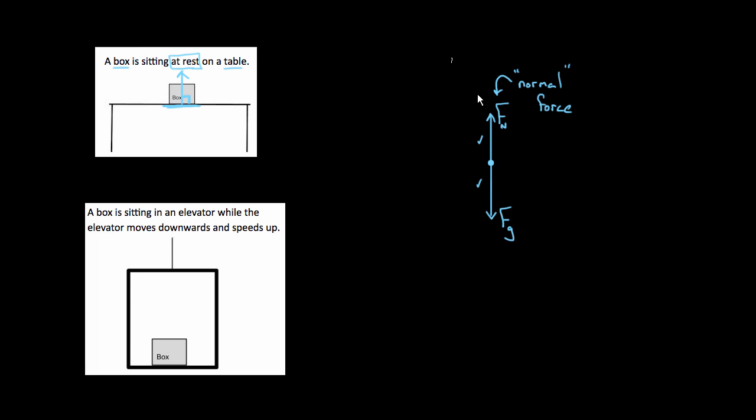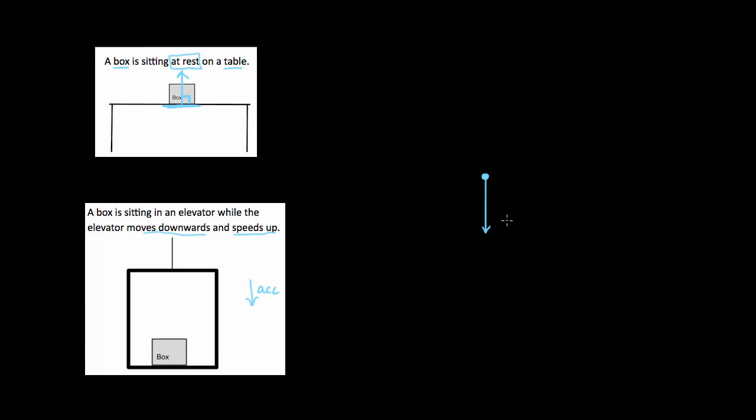What if the box is in an elevator moving downward and speeding up? Draw a dot. Is there gravity? Yes, there's always gravity — force of gravity straight down. You might want to say there's an elevator force downward because you're moving down, but that's not true. Where is the surface exerting the force on the box? It's underneath.